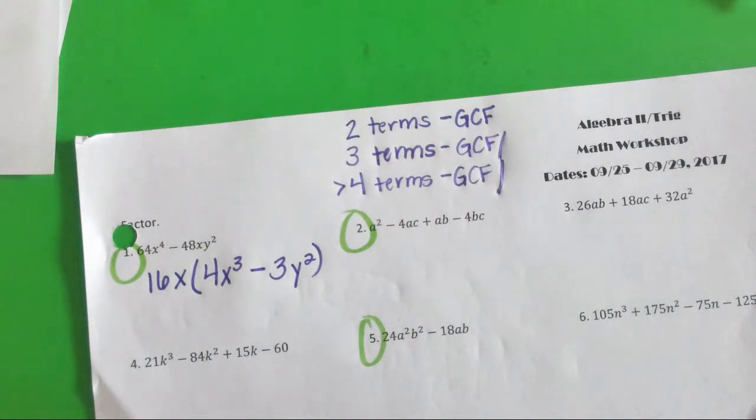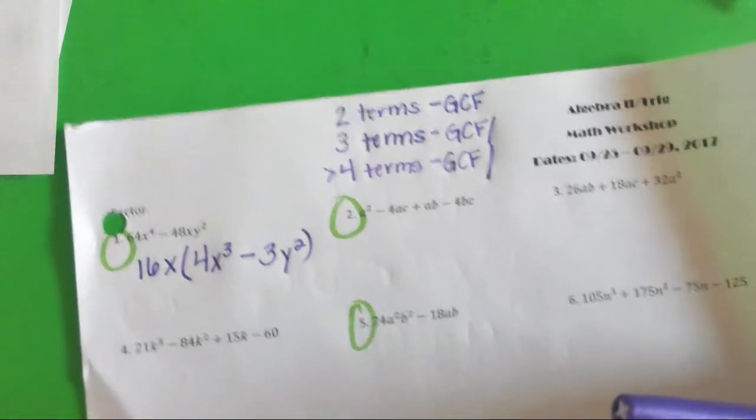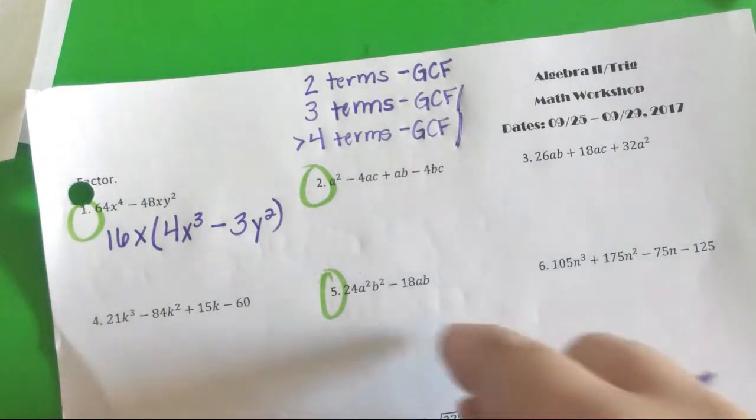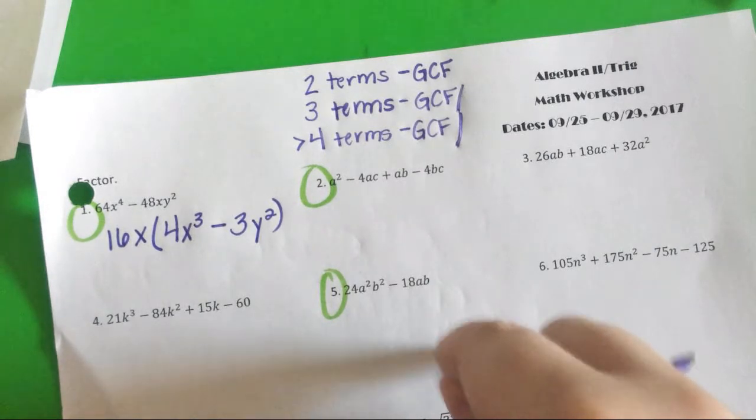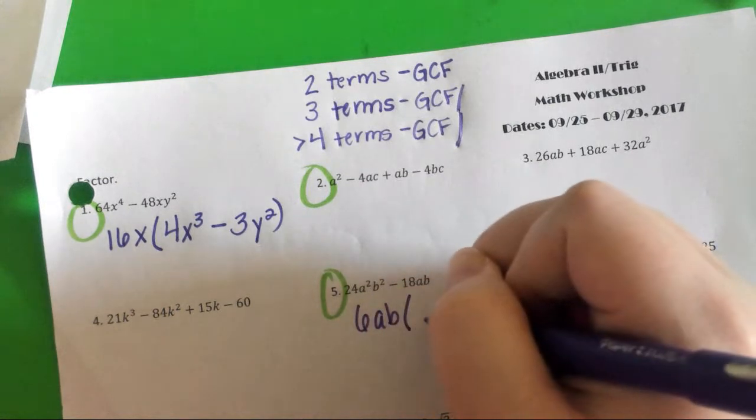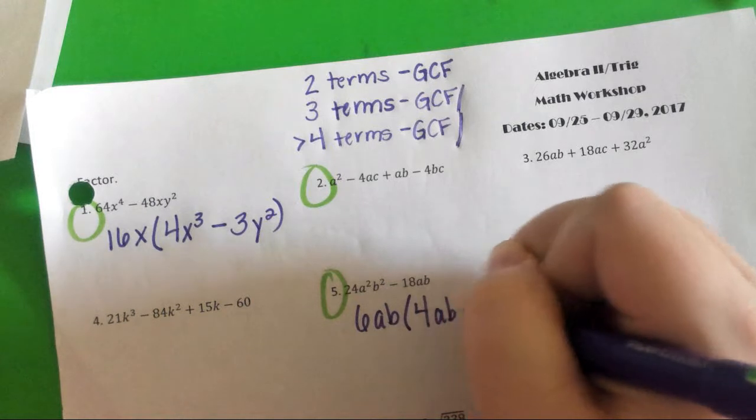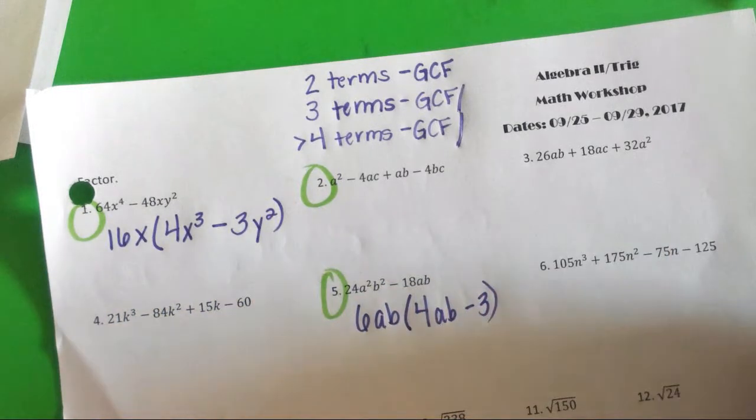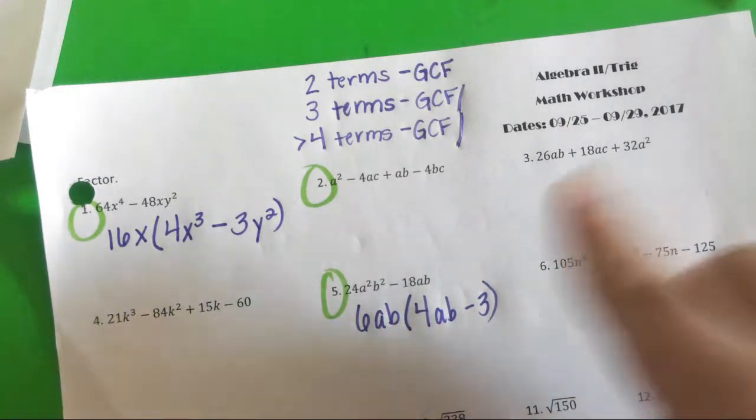Let's go to number five before I finish filling in my little hints up here. Number five, there are only two terms. So GCF is the best thing we can do. What can I factor out on number five? 6AB, he says. And what would you be left with? A or 4A. And we'll give Daniel and Nick another point. So those are our only problems with two terms.